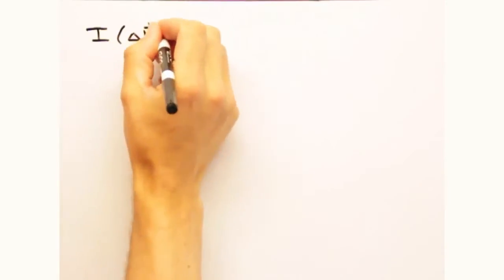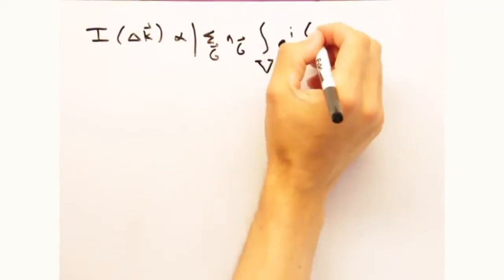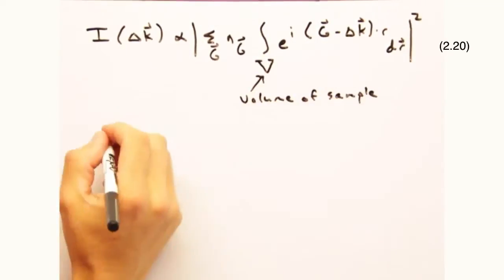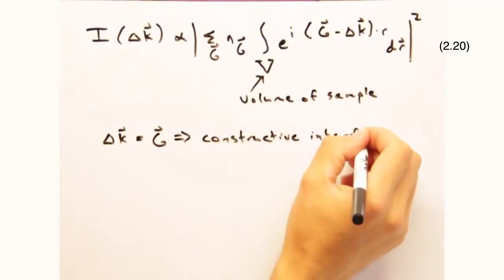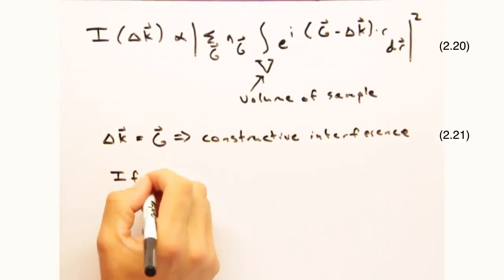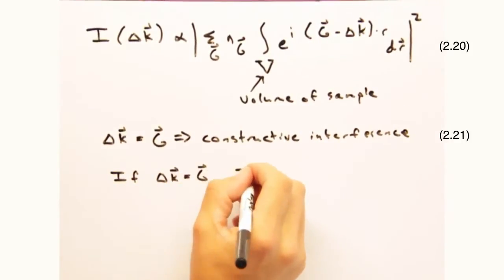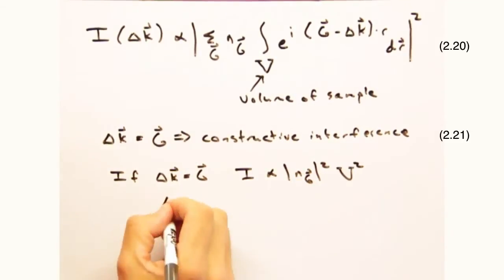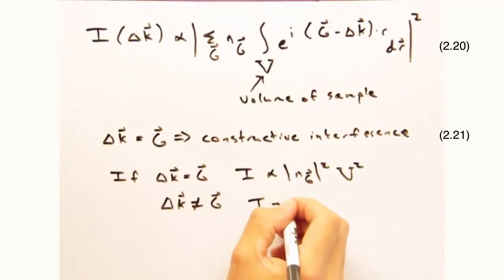As a reminder, we are evoking constructive interference only when delta k equals g, otherwise this whole integral drops to zero. When that condition is satisfied, you get an expression that looks like so, where the intensity at a particular hkl is proportional to the absolute value of the Fourier coefficient at that same hkl.